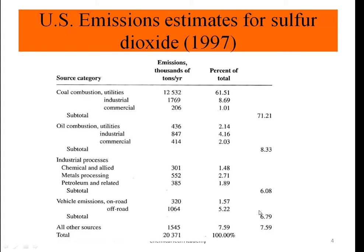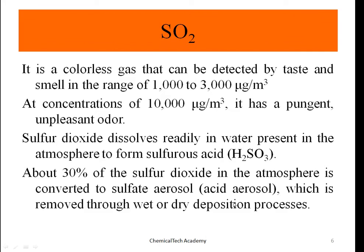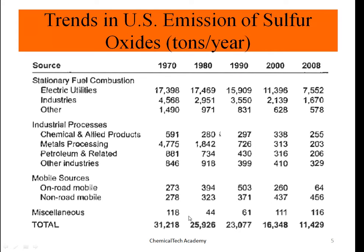Vehicle emissions of sulfur dioxide are not very high because petroleum refineries and petrochemical complexes typically remove the sulfur content of gasoline. So the gasoline used in cars contains a much lower amount of sulfur. All other sources account for more than 7% of total SO₂ emissions.